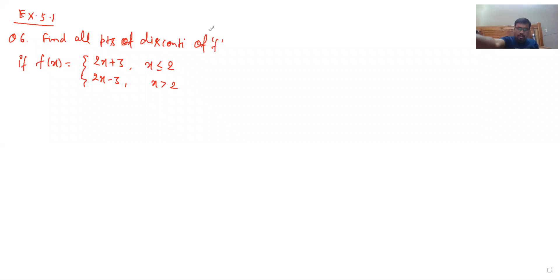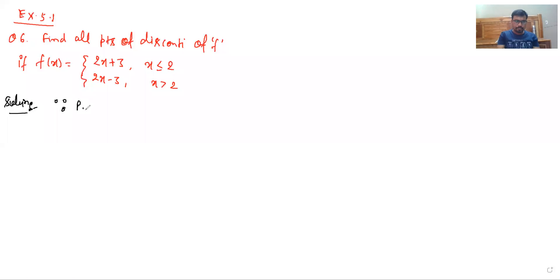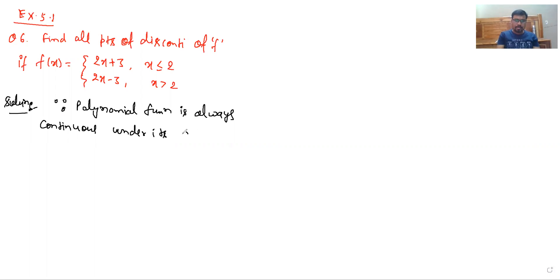As we saw in the last class, the polynomial function is always continuous. Since a polynomial function is always continuous under its domain or given interval, f(x) is continuous everywhere and we have to check the point at which the function changes.